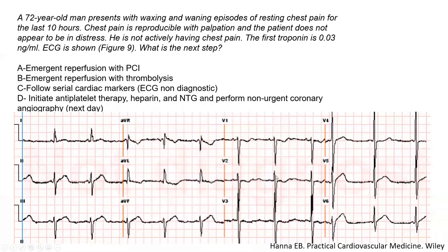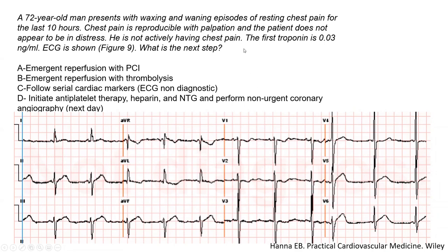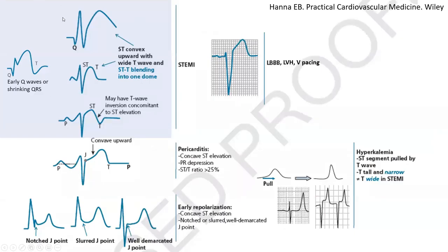Here is another similar presentation with an even more subtle EKG. It again has subtle ST depression in V1 through V3 — the R wave is not big yet, but it will become big as posterior Q waves eventually form. Beside the ST depression in V1–V3, the STT morphology in V5–V6 is quite concerning — what we call the domed STT morphology. If this patient were asymptomatic, I would not worry about this morphology in V5–V6, but in this context — with those ST depressions and that STT morphology — I would worry about subtle STEMI.